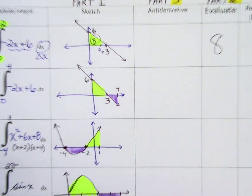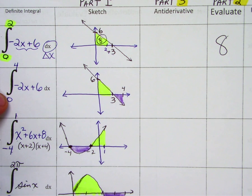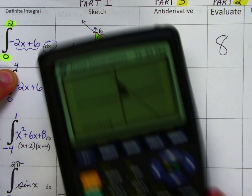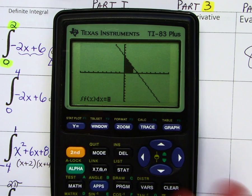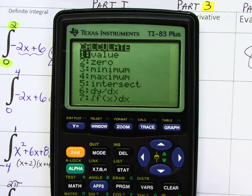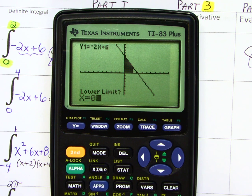Now notice the graph in the second one here. The only thing I did is I changed the upper bound to a 4. So I'm going to do the same process. I have to hit 2nd calc. Item number 7. Lower limit in this case is 0. Upper limit is 4. 0, enter. 4, enter.